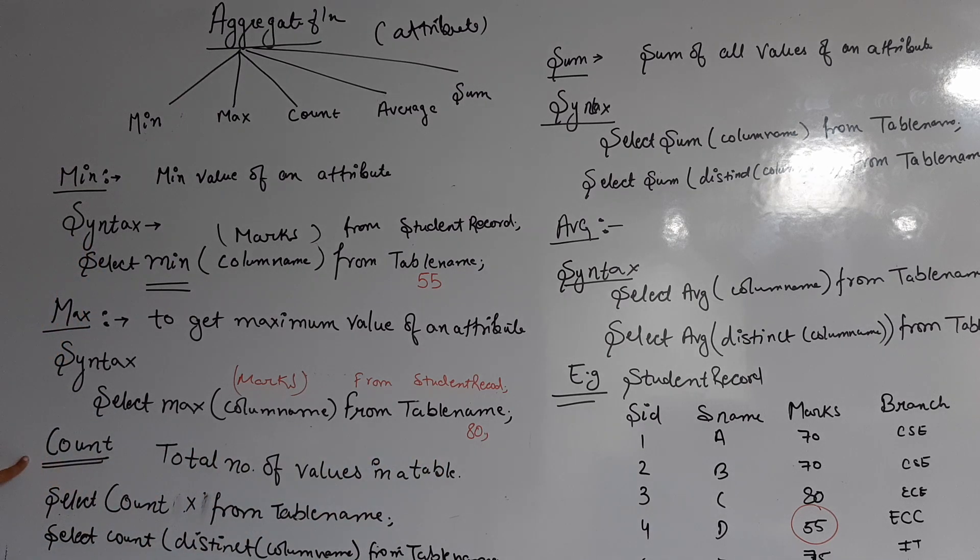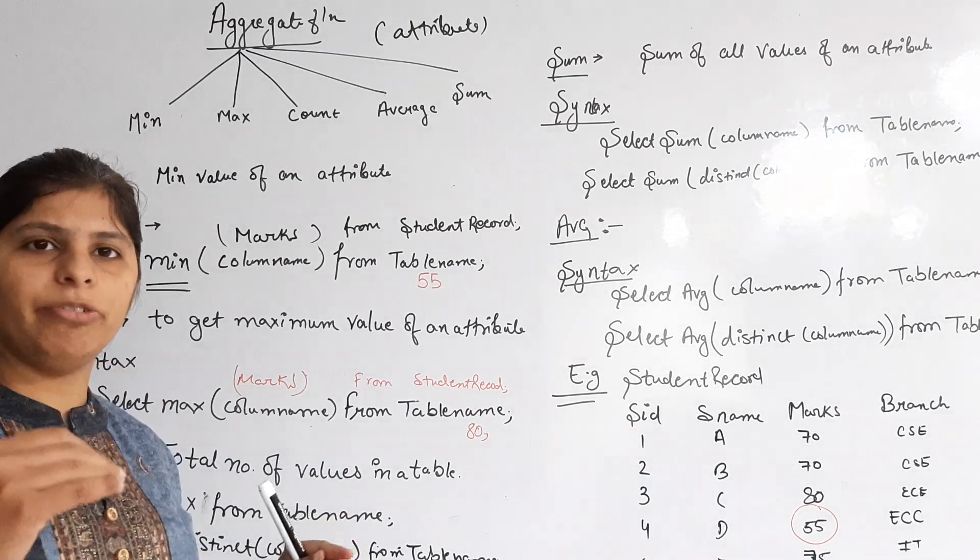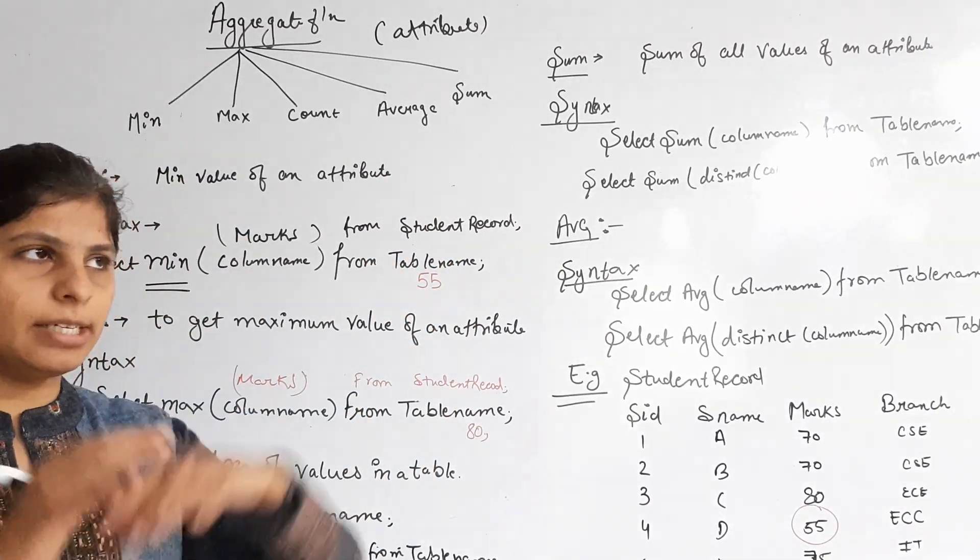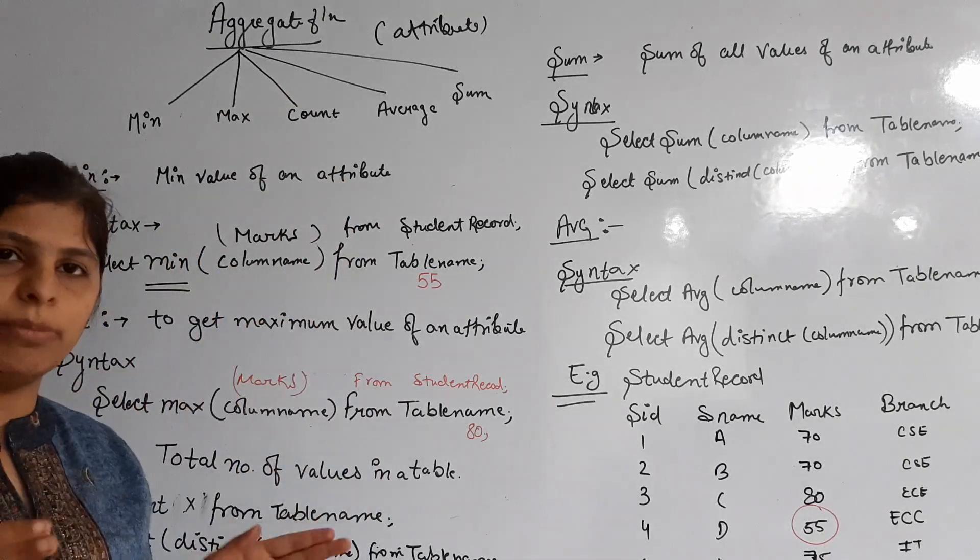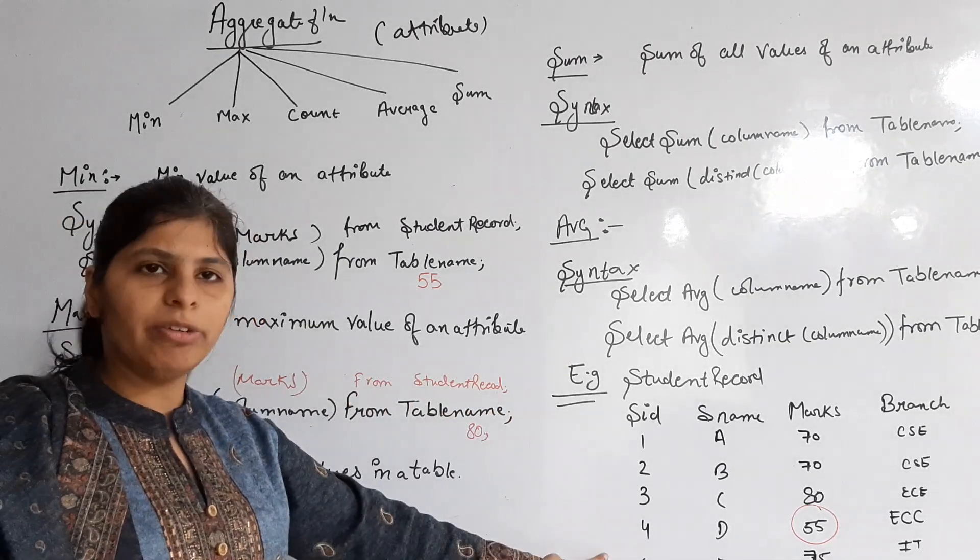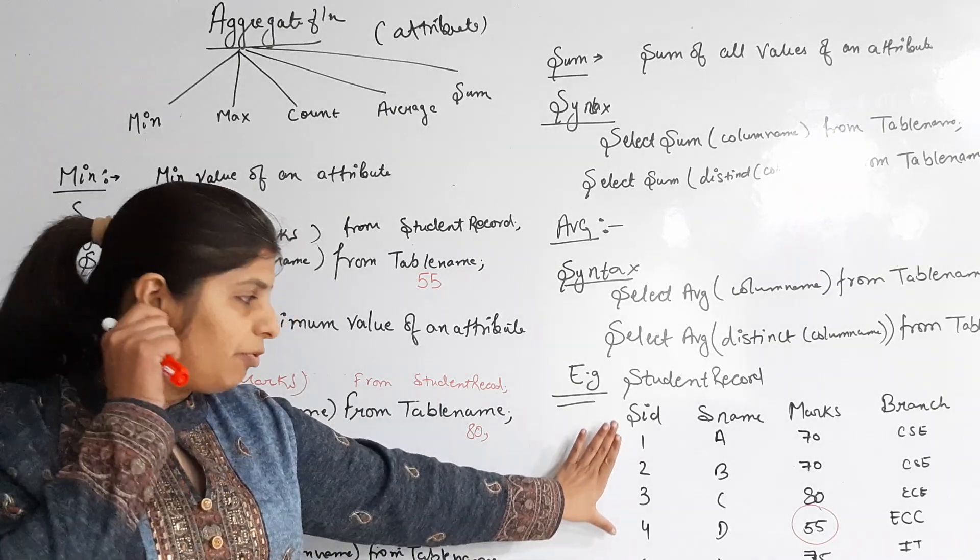The COUNT function counts how many values are in a particular table. Suppose in a class there are 65 students - count means one, two, three, four, five, six, seven, eight. So how many rows are present in this table is known as count. In this example table I have five rows, so five number of rows.